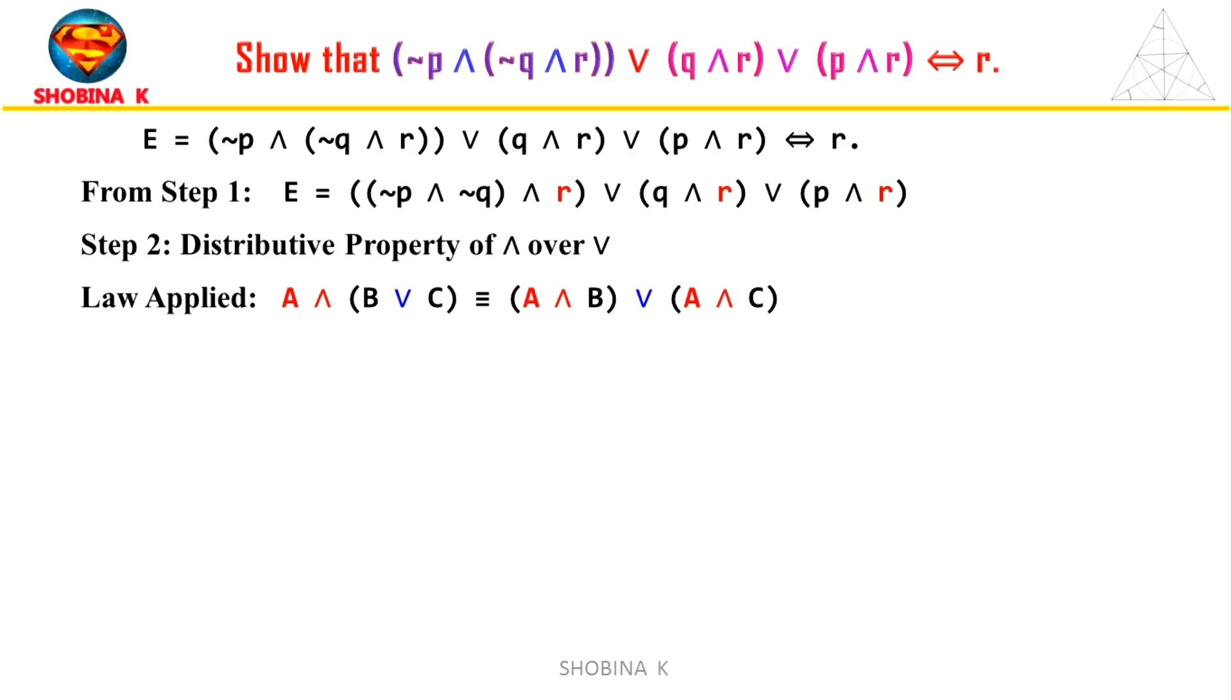A and (B or C) means A is true and at least one of B or C is true. (A and B) or (A and C) means either A and B are both true, or A and C are both true.